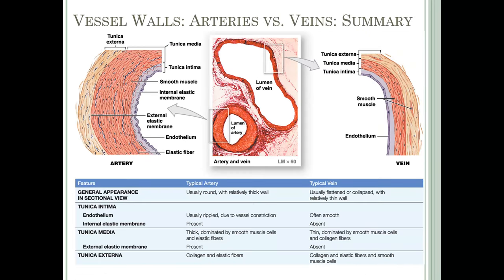Here is a summary table comparing arteries and veins. Arteries: usually round with relatively thick walls; endothelium usually rippled due to vessel constriction; internal elastic membrane present; thick tunica media with lots of smooth muscle and elastic fibers; external elastic membrane present; tunica externa of collagen and elastic fibers; no valves. Veins: usually flattened or collapsed with thin walls; endothelium smooth; no internal elastic membrane; thin tunica media with fewer smooth muscle cells and collagen fibers; no external elastic membrane; some smooth muscle in tunica externa; valves present.